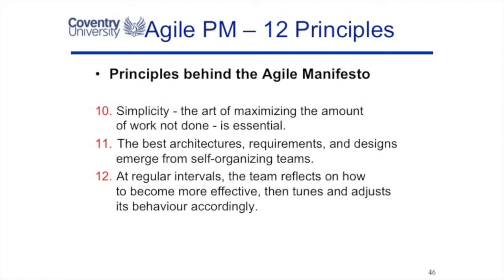Principle 10 — very useful — is simplicity: maximize the amount of work you do not have to do, so only do what is really essential. Principle 11 suggests that the best designs and system architectures come from self-organizing teams, so all the work on leadership, group dynamics, and forming-storming-norming-performing has a place in agile. The team must reflect on what it's learned and change its behaviour to become more effective.